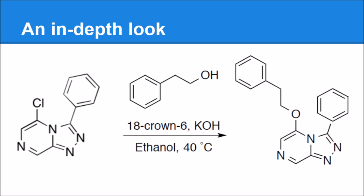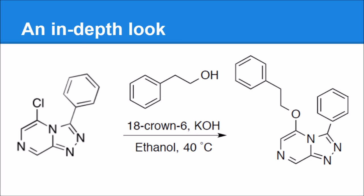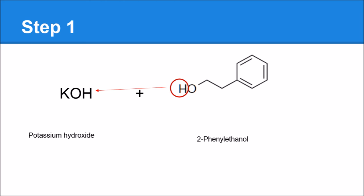The first step is we have potassium hydroxide in the mix, and that is going to react with the phenylethanol and rip off this hydrogen, so the OH plus H just goes to water. That leaves our phenylethanol with an O⁻ ion, and there's a K⁺ there that would normally stabilize it.